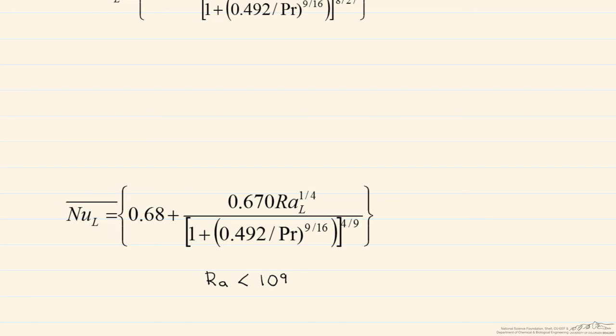So of course we have different correlations depending on the geometry. One of these is for a horizontal plate. The ones we were looking at before were vertical plates, now we're looking at horizontal. But here we have different choices. First, whether the plate is hotter or colder than the quiescent air, and then which side of the plate is up.